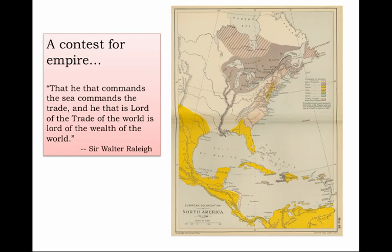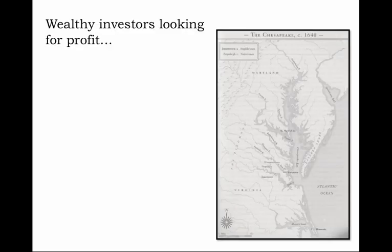The voyages of Drake and the other English sea dogs helped prepare a potential map of English colonization that would involve them in basically a contest for empire lasting the next couple of centuries. It was understood that to try and build empire meant contesting with the imperial claims of rivals. As Sir Walter Raleigh put it — one of these merchant adventurer types and part of a powerful investing group in England — 'he that commands the sea commands the trade, and he that is lord of the trade of the world is lord of the wealth of the world.'